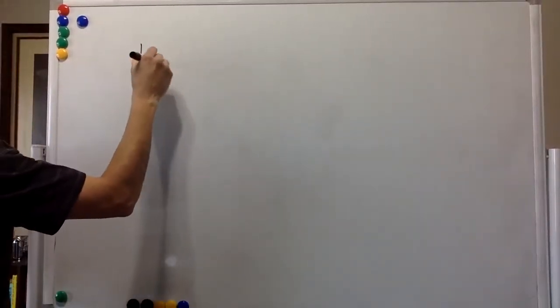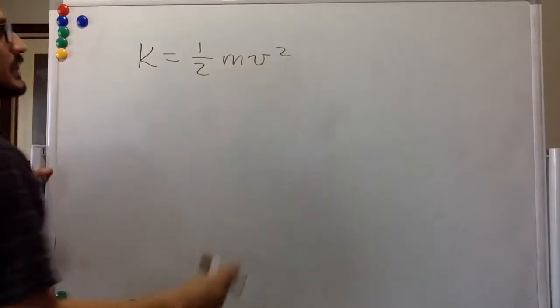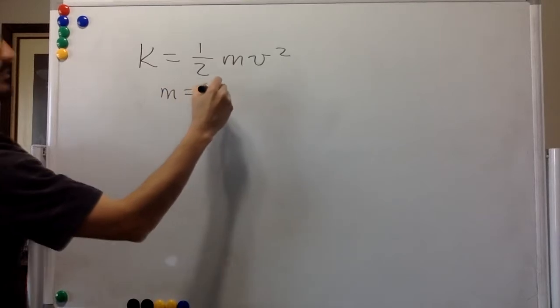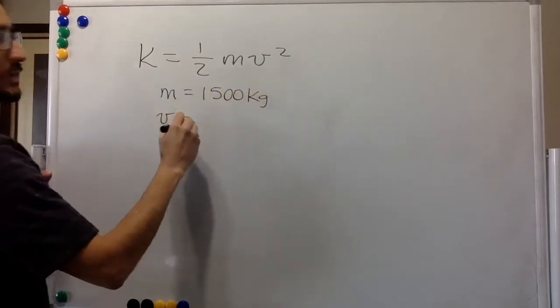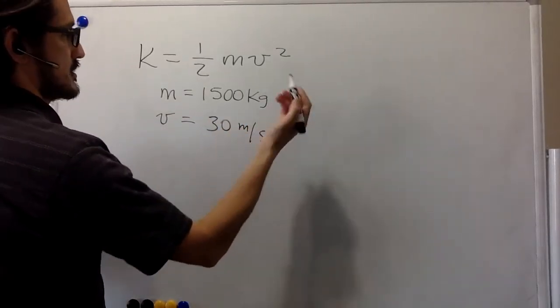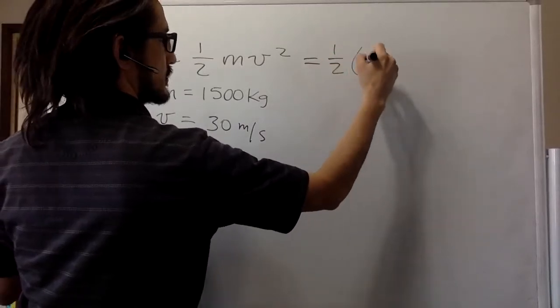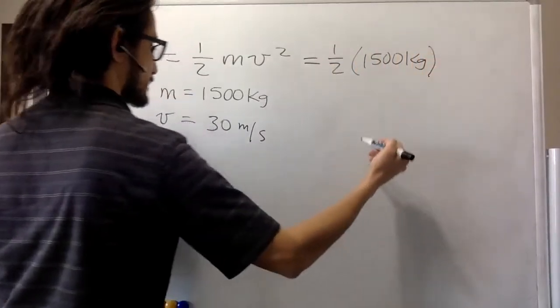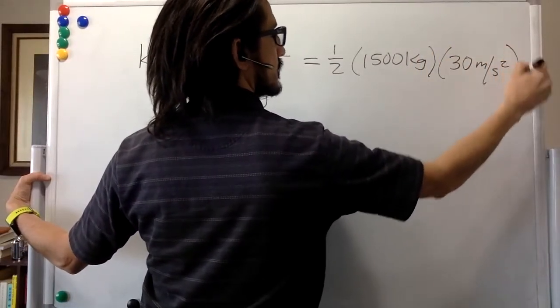So we know that the kinetic energy is 1/2 of the mass times the velocity squared. So if the mass is 1,500 kilograms and the velocity is 30 meters per second, well, just plug and play.